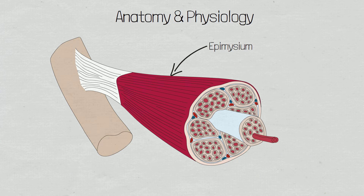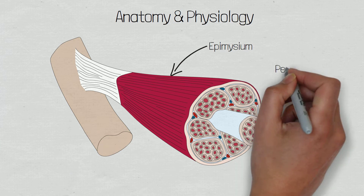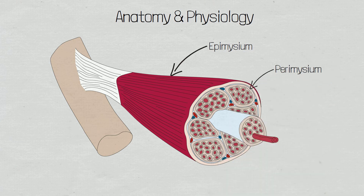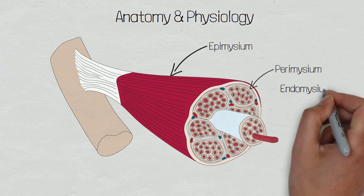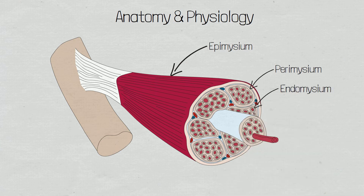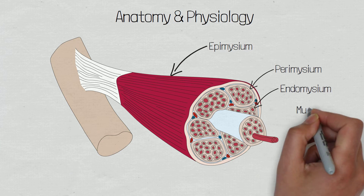The next layer is the perimysium — peri meaning 'around'. This is a sheath of connective tissue that groups muscle fibres into bundles, or what are known as fascicles. The endomysium — endo meaning 'within' — is a layer of areolar connective tissue that encompasses each individual muscle fibre.